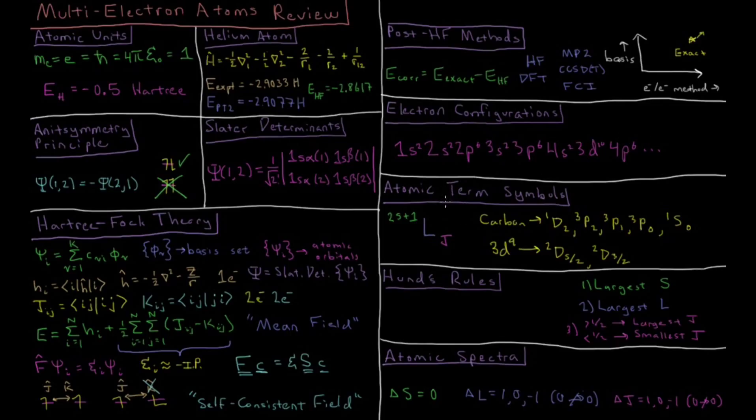Once we take into account spin-orbit coupling for atoms, we have atomic term symbols which represent the distinct electronic states possible for a given atom. These are indicated the same way as for hydrogen, but now with multiple electrons, it's more involved to determine what these term symbols actually are. We have examples for carbon and for a hypothetical 3d⁹ atom.